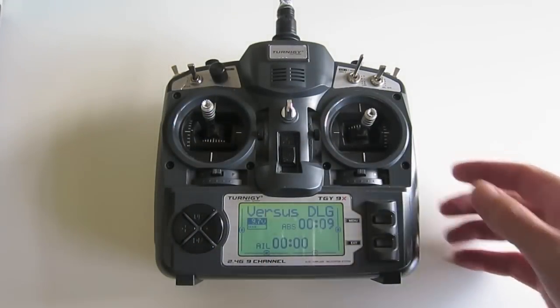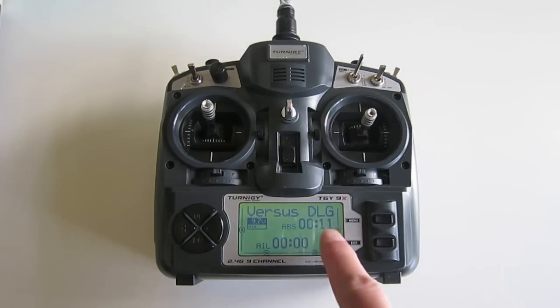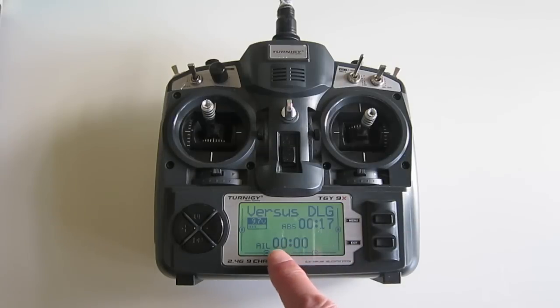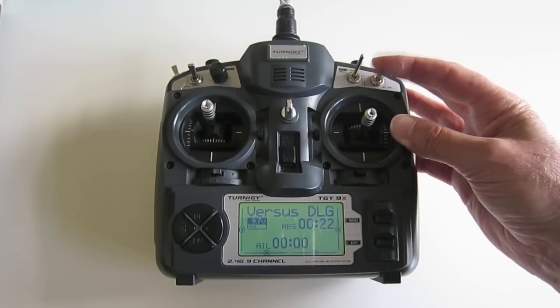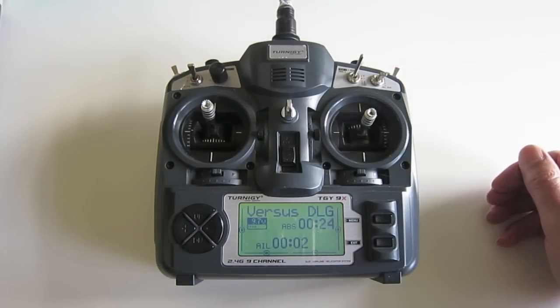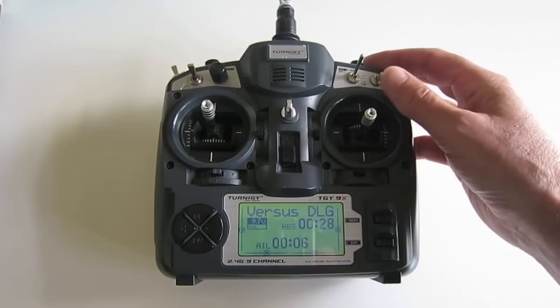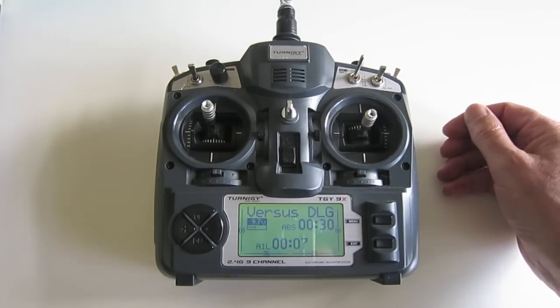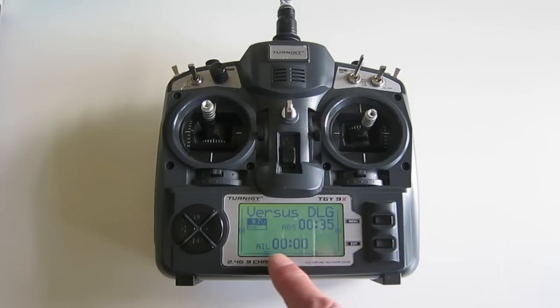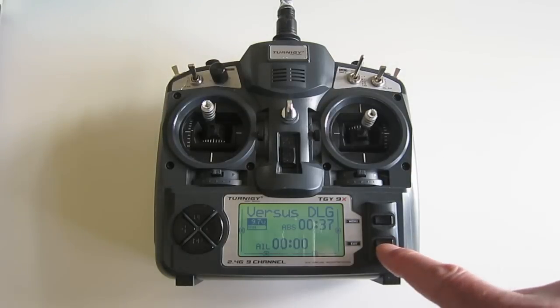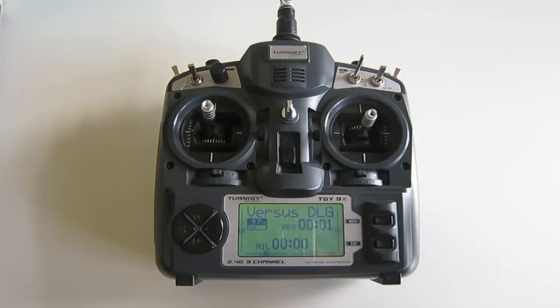And timers on the transmitter: I have one overall timer which just comes on when I turn the transmitter on, and I have a flight timer as well which is activated by this aileron switch. That times the length of my flight if I remember to switch it on and off again. Short press of exit zeros the flight timer. Long press of exit zeros both timers.